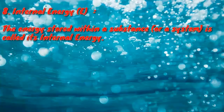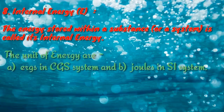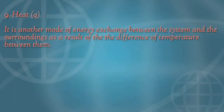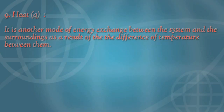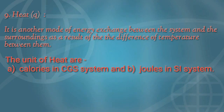Internal energy, represented by capital E, is the energy stored within a substance or a system. The units of energy are ergs in the CGS system and joules in the SI system. Heat, symbolized by small letter Q, is another mode of energy exchange between the system and the surroundings as a result of a difference in temperature between them. The units of heat are calories in the CGS system and joules in the SI system.